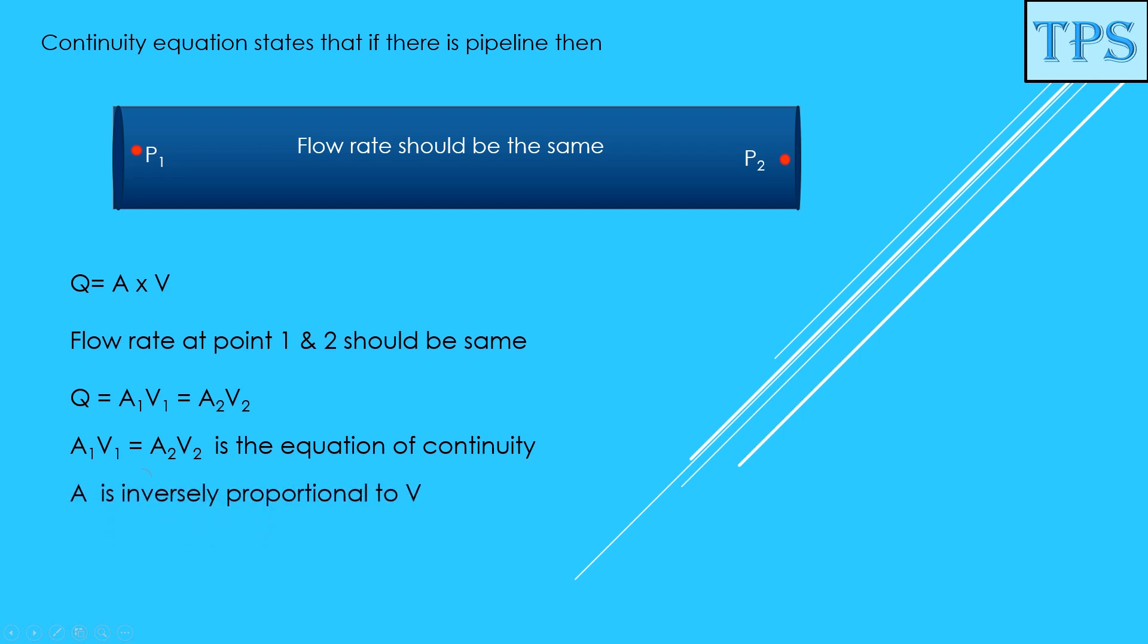One thing which needs to be noticed is that area is inversely proportional to velocity. Now we will simulate this and understand.